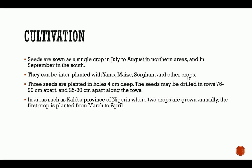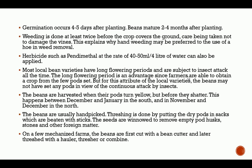In areas such as Kabba Province of Nigeria where two crops are grown annually, the first crop is planted from March to April. Germination occurs 4 to 5 days after planting, and beans mature 2 to 4 months after planting. Weeding is done at least twice before the crop covers the ground, with care taken not to damage the vines — which is why hand weeding may be preferred over mechanical methods.